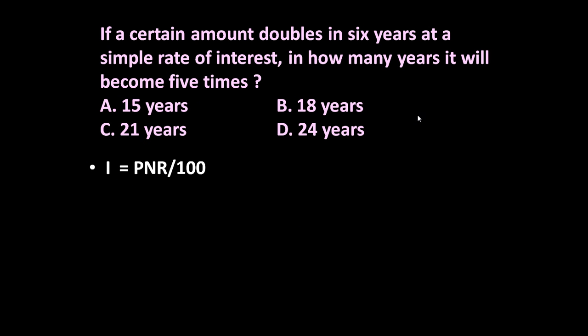The amount becomes double in 6 years. It means after 6 years, interest and principal are same. If initially he invested rupees P, then after 6 years he will be having 2P amount. Out of this 2P, P will be interest and P will be principal.